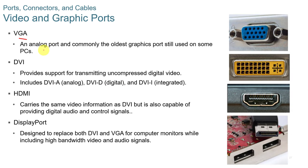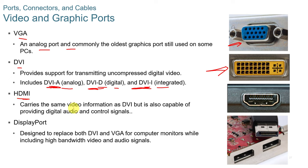VGA is an analog port still found on some devices. DVI comes in three versions — DVI-A (analog), DVI-D (digital), and DVI-I (integrated) — and you need to know the differences for the CompTIA exam. HDMI carries both video and audio on the same cable. DisplayPort is designed to replace both DVI and VGA for computer monitors while including high-bandwidth video and audio signals. DisplayPort has a cutout on one side so it can only be plugged in one direction.